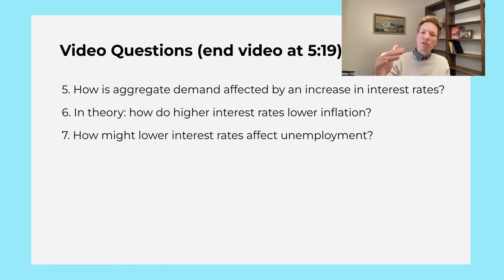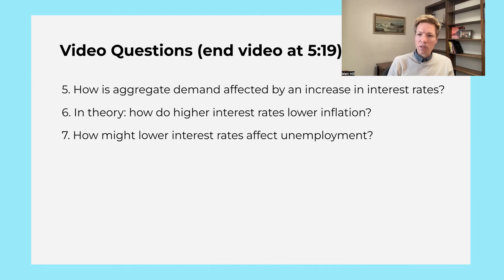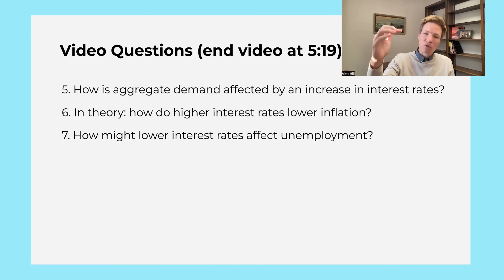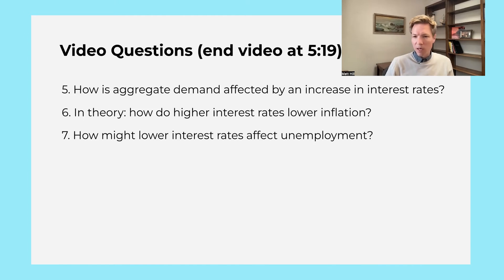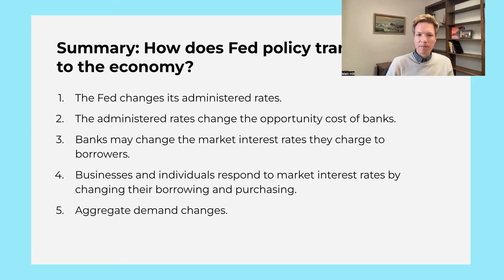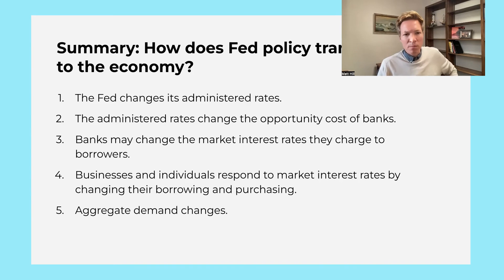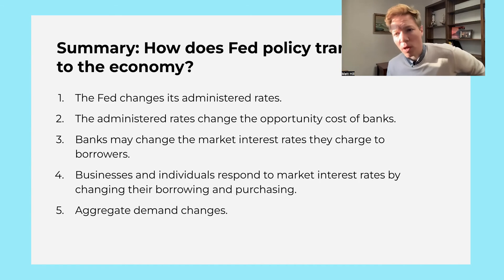This alludes to that dual mandate where they're trying to keep prices stable — trying to keep inflation down — and trying to keep unemployment down as well. We summarize how this works: the Fed changes their rates, which changes the opportunity cost for banks, the banks then change their rates, and then businesses and individuals respond to those interest rates.